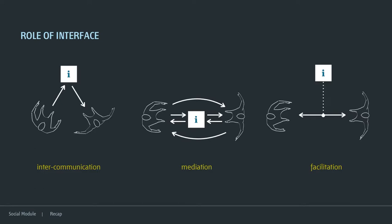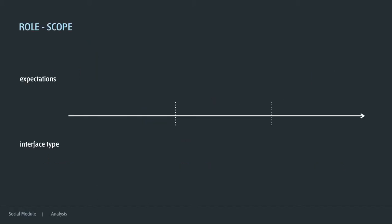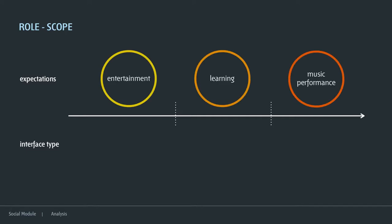I talked a little about the roles of interface. I definitely don't want something like a lot of Kinect or Wii games where you're just looking at the screen. I want something in between. I created a graph plotting expectations and interface types, dividing things into two sides: entertainment, learning in the middle, and music performance. All three are not mutually exclusive — they all have common ground — but I needed this to figure out where to put things.